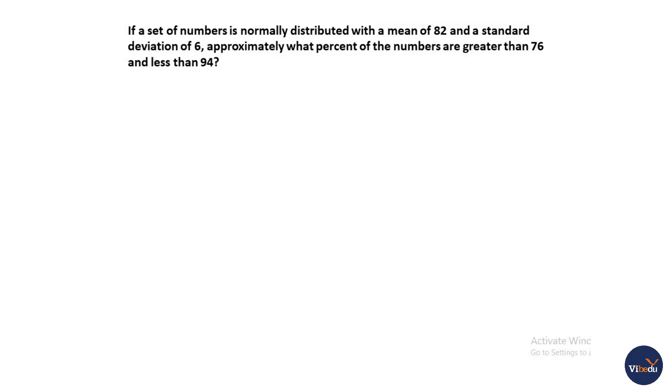If a set of numbers is normally distributed with a mean of 82 and a standard deviation of 6, approximately what percentage of the numbers are greater than 76 and less than 94?